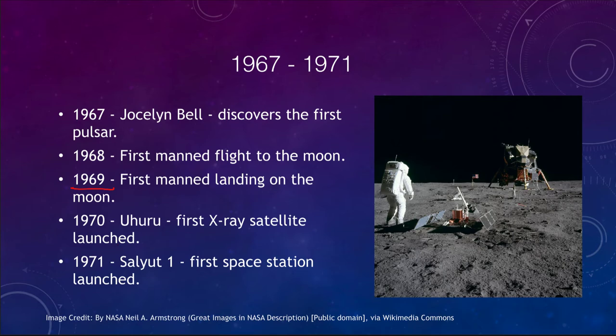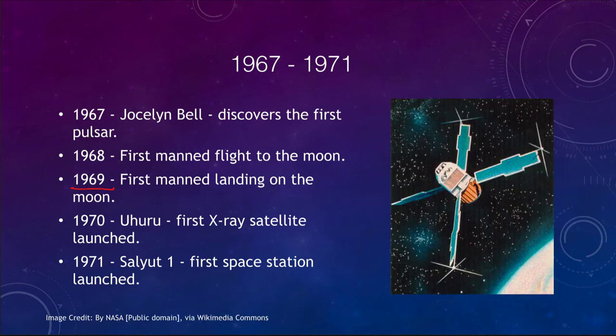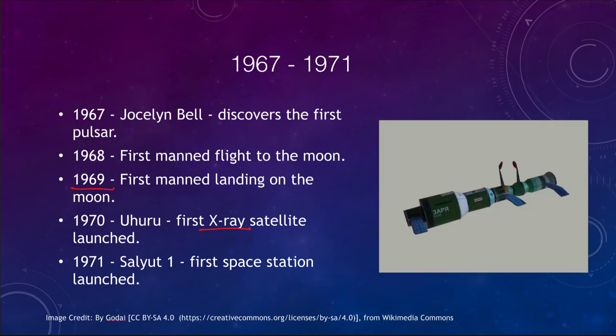Not everything had to do with the moon. The Uhuru satellite was launched in 1970, opening up yet another window on the universe — this was the first time we could study X-rays from space, which are unable to penetrate the Earth's atmosphere to be seen from the ground. Also in the early 70s, Salyut 1, the first space station, was launched — a precursor to the International Space Station today.